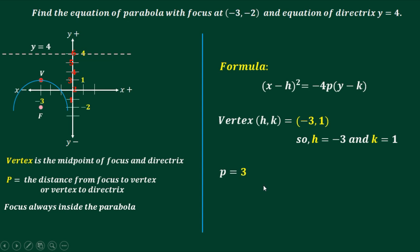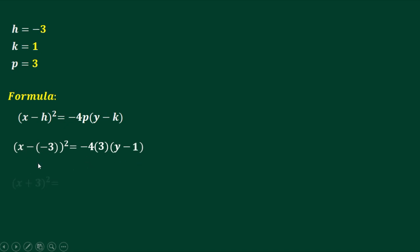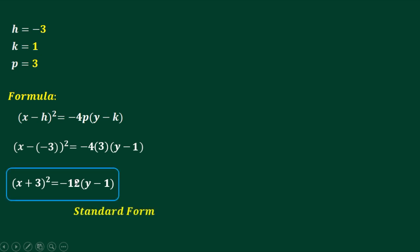These are the values we use to solve this problem. We substitute h = -3, k = 1, and p = 3 into the formula. h is -3, p is 3, and k is 1. Simplifying: the double negative becomes positive, and negative 4 times 3 gives -12. This is our standard form.